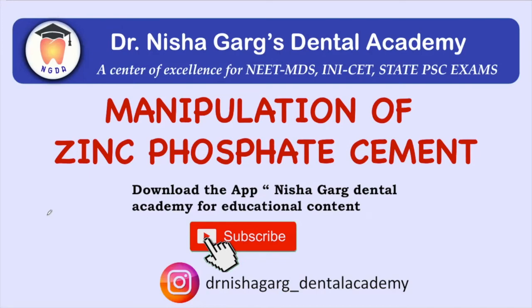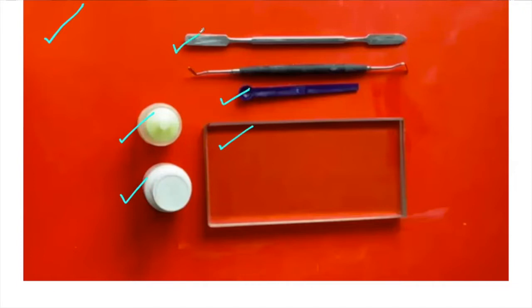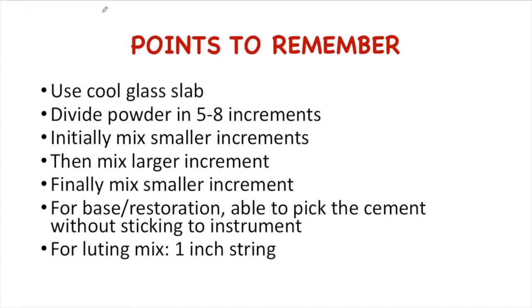Hello everyone. In today's video we'll be learning about the manipulation of zinc phosphate cement, one of the oldest and most widely used cements. This picture shows the materials required: powder, liquid, a cool glass slab, measuring scoop, cement mixing spatula, and plastic carrier.